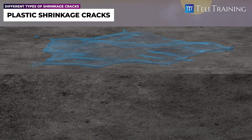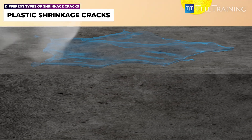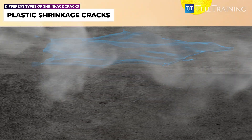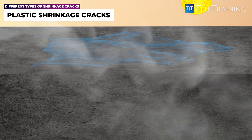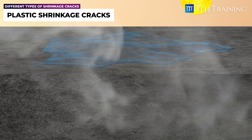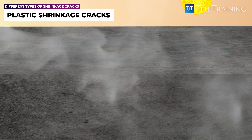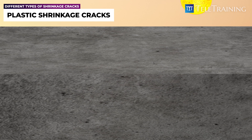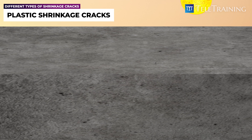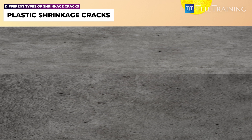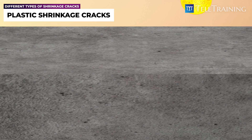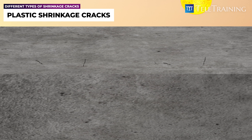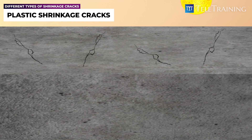However, on a hot or windy day, or when using high-strength concrete with insufficient bleed water, the surface evaporation rate can exceed the bleeding rate. As a result, the surface may begin to dry out and shrink locally, eventually leading to the formation of random shrinkage cracks.